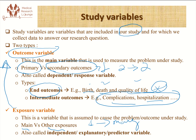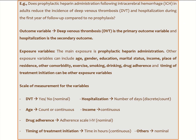As an example research question: Does prophylactic heparin administration following ICH in adults reduce the incidence of DVT and hospitalization during the first day of follow-up compared to no prophylaxis? Here we have two outcomes — DVT and hospitalization. Let's say our main interest is identifying the development of DVT as our primary outcome, and hospitalization as our secondary outcome. From the research question, the researchers are interested in studying the effect of prophylactic heparin administration on the development of DVT or hospitalization. So our main exposure variable is prophylactic heparin administration.